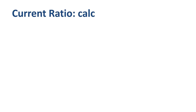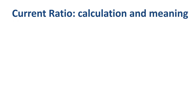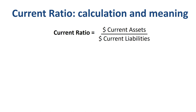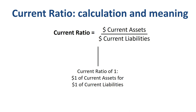Once we have found the current assets and current liabilities numbers on the balance sheet, we can calculate and interpret the current ratio. The current ratio is simply current assets divided by current liabilities. If a company has a current ratio of 1, it means every dollar of current liabilities is covered by a dollar of current assets on the date of the balance sheet. Remember, the balance sheet is a picture at a point in time, and the current ratio could move up or down significantly between balance sheets.